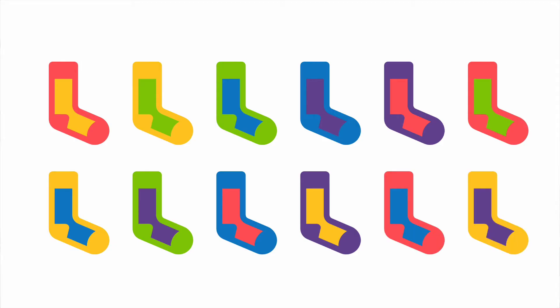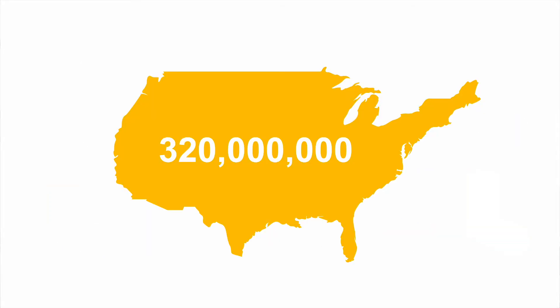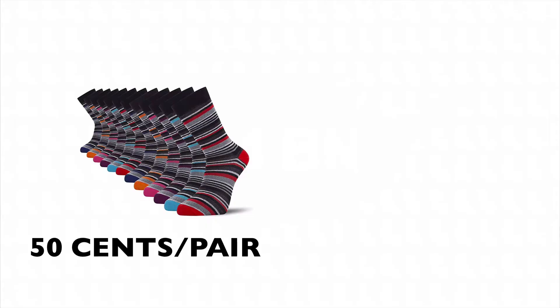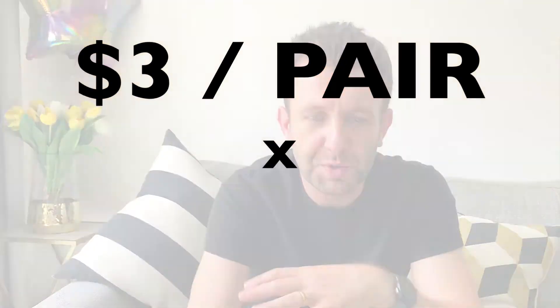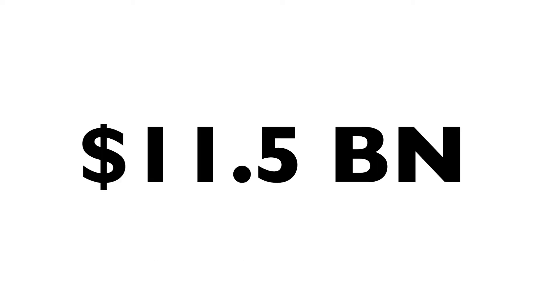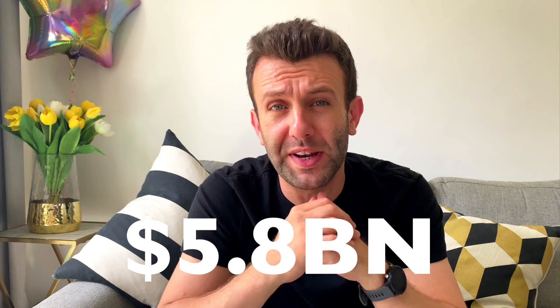Let's see if we can quickly work out how much money is spent on socks every year — specifically the market size of men's socks in the US. It's going to be a mix of rough numbers we think we know and assumptions for what we don't. A good place to start is how many socks someone gets through. I'll guess the average person needs a new pair roughly once a month — so 12 pairs a year. Multiply that by the US population of roughly 320 million, giving us 3.84 billion pairs bought per year. At an estimated $3 a pair, that's a total market of $11.5 billion. For men's socks specifically, that's roughly $5.8 billion.